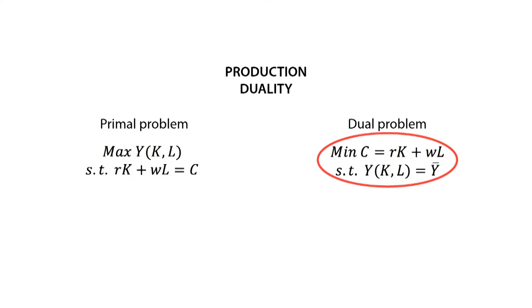And the new equation for the dual problem is now noted as the minimization cost problem, which is equal to the sum of its factors of production, such that it achieves a production level which depends on its factors of production, which is at least as big as the output level it seeks.